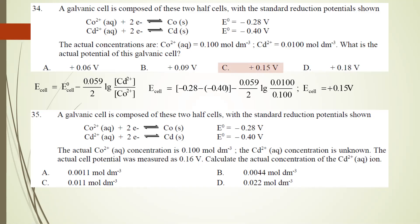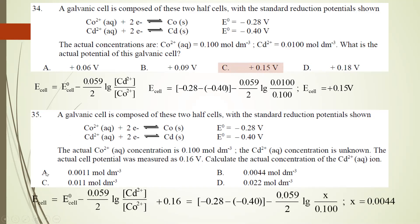Number 35: using the same half-cells, the concentration of Co2+ is 0.100 mol and Cd2+ is unknown. The actual cell potential is 0.16 V. Apply the same Nernst equation, substituting all known values: 0.16 = 0.12 - 0.059/2 × log(X/0.100). After calculation, X = 0.0044 mol per dm³.